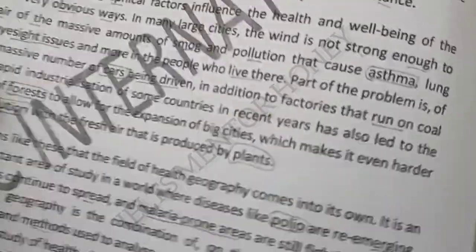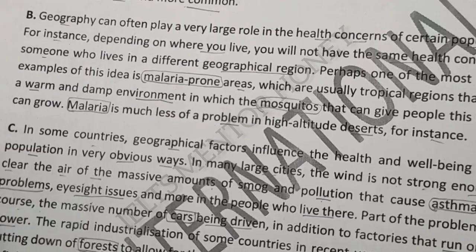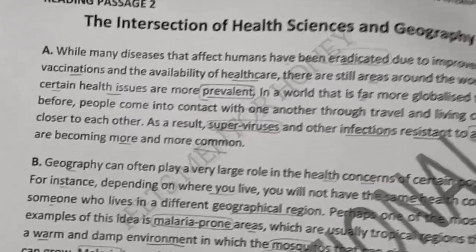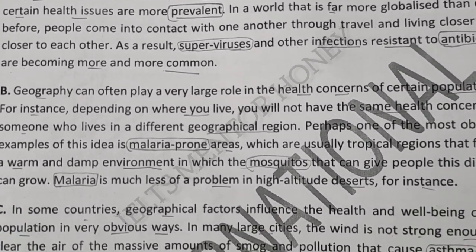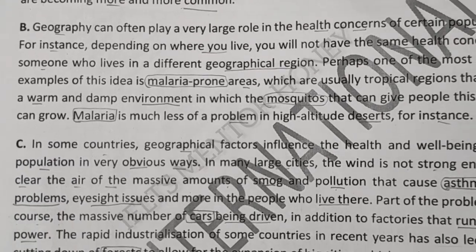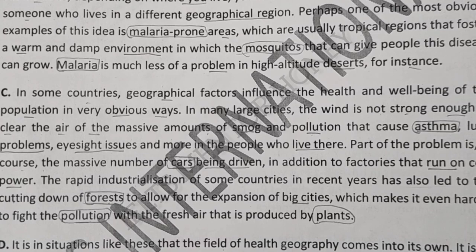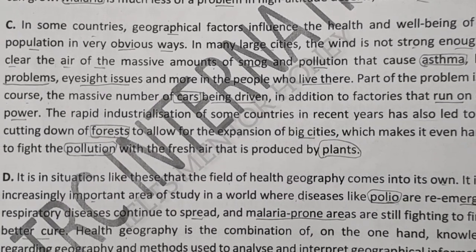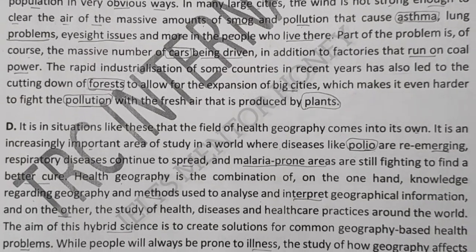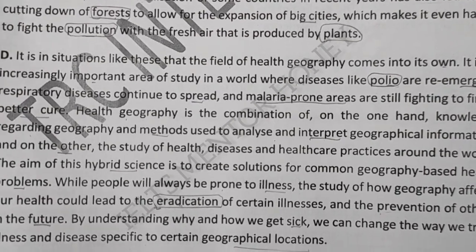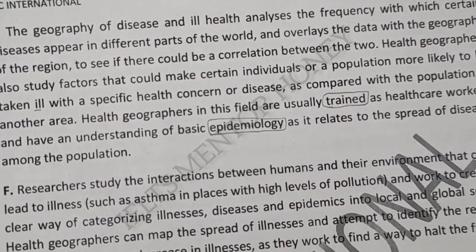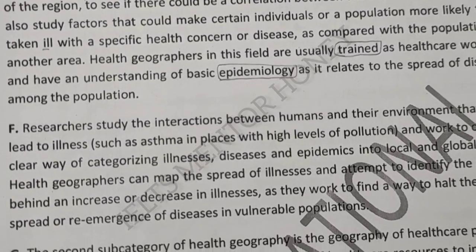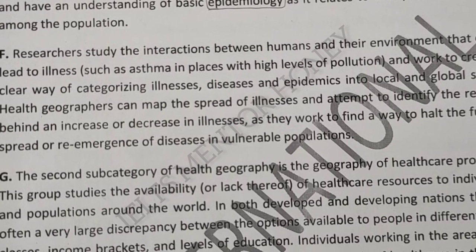Some questions need deeper understanding of the passage — like 'which paragraph contains the following information' or matching questions. You should always do these at the end. Do not start with them. If questions 1 to 5 are of the 'which paragraph contains the following information' type, they will drain your brain. Then when you come to easier questions, your mind will not support you and you will feel very stressed.